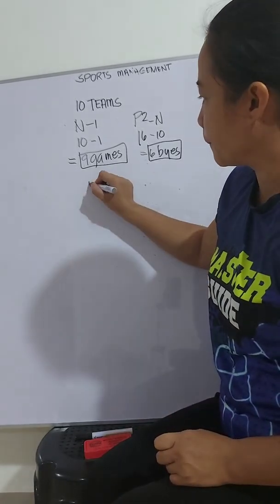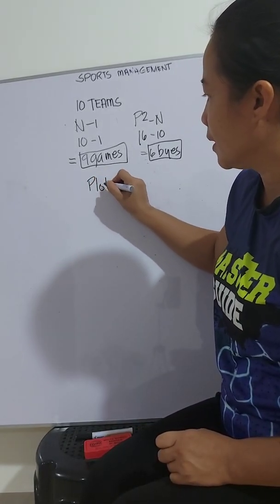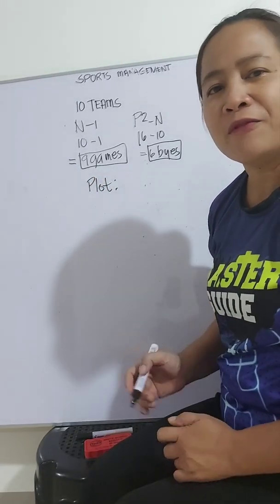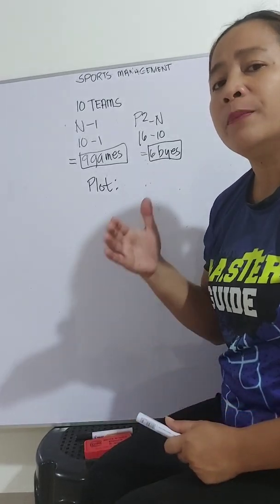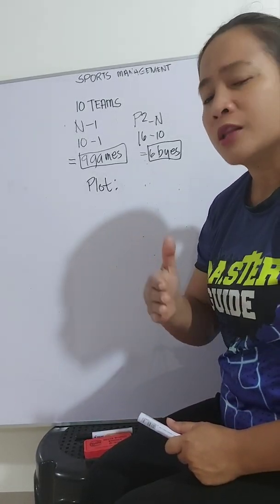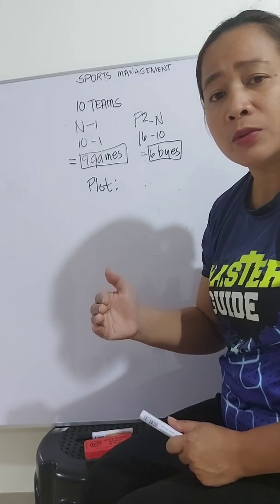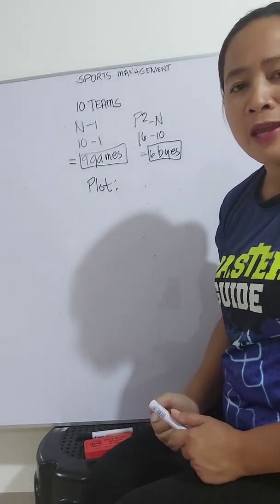Let's have the plot. This is to identify who will be game 1, the winner 1, game 2, until game 9.